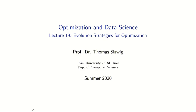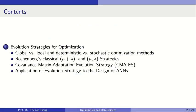Hello and welcome to the 19th lecture in the course Optimization and Data Science. The topic of this lecture is Evolution Strategies for Optimization. I will start with a comparison of global and local methods for optimization and deterministic and stochastic methods for optimization. This overview also refers to algorithms we already covered, which were basically local and deterministic optimization methods.